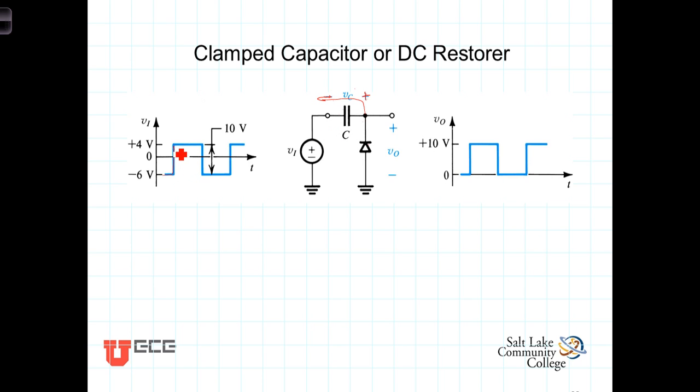When the voltage switches to the plus four, we now have the situation where this voltage is higher than this voltage, but the diode does not allow conduction, so there will be no current flowing to discharge the capacitor.